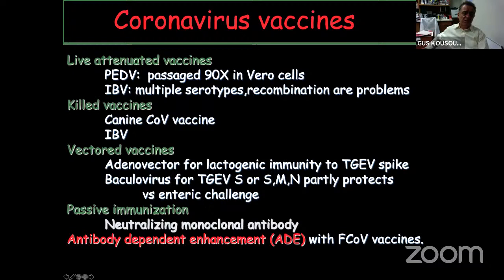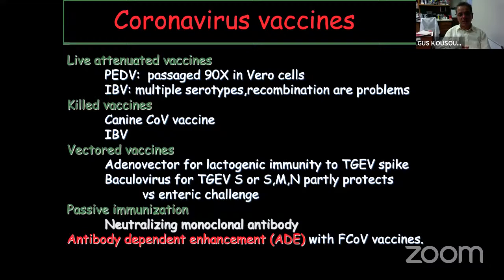In terms of vaccines, we have been working on coronavirus vaccines for quite some time — successfully in many instances, and unsuccessfully in others. We have live attenuated vaccines for porcine epidemic diarrhea virus through serial passage 90 times or more in African green monkey cells. Infectious bronchitis virus has multiple serotypes with vaccines through a similar mechanism. We also have killed vaccines for canine coronavirus and infectious bronchitis virus, providing some protection, as well as vector vaccines including adenovirus vaccines for lactogenic immunity.